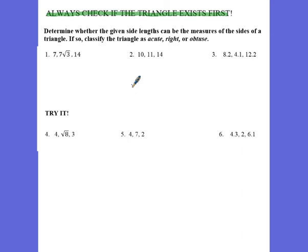So once you confirm that, yeah, this triangle exists, then you're going to use your Pythagorean theorem for it. So what we're going to do here is determine if the triangles are acute, right, or obtuse. So when I add these two together, these are the two smallest sides, 7 and 7 times the square root of 3. 7 times the square root of 3 is about 12.2. So if I add 7 to that, yes, that's bigger than 14.